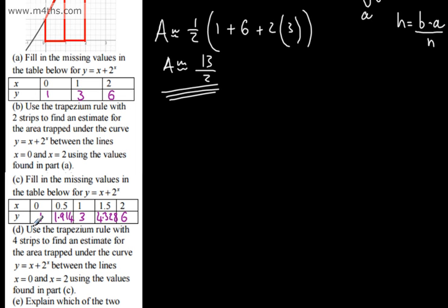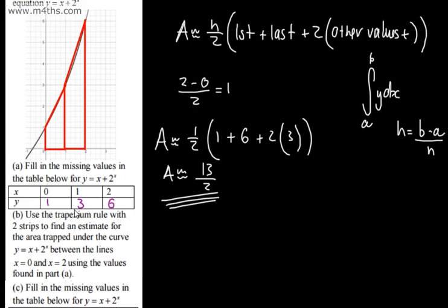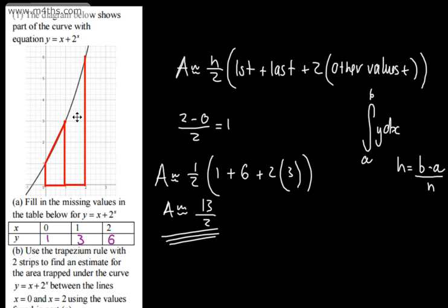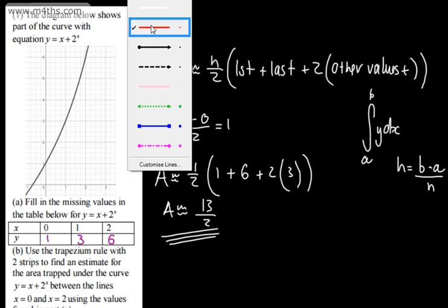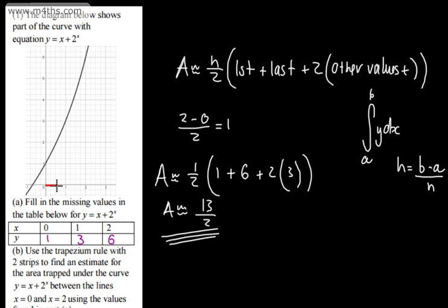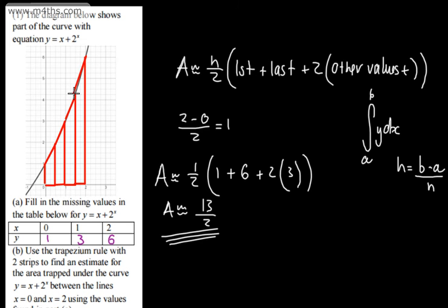In part D, we use the trapezium rule with 4 strips to find an estimate for the area under the curve between x equals 0 and x equals 2. With 4 strips, we have 5 ordinates. You can see that with more trapeziums, the top of each one gets closer and closer to the curvature of the curve, improving the estimate.